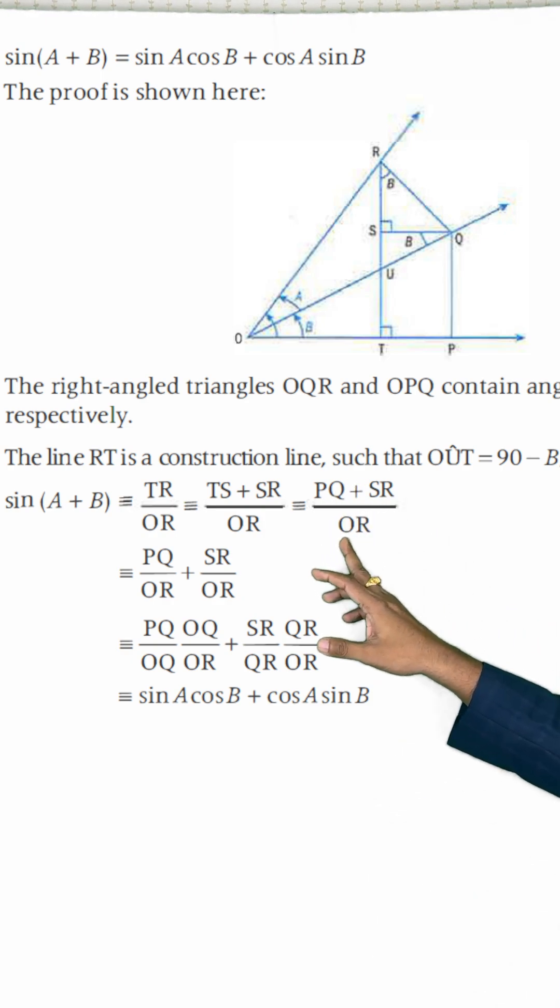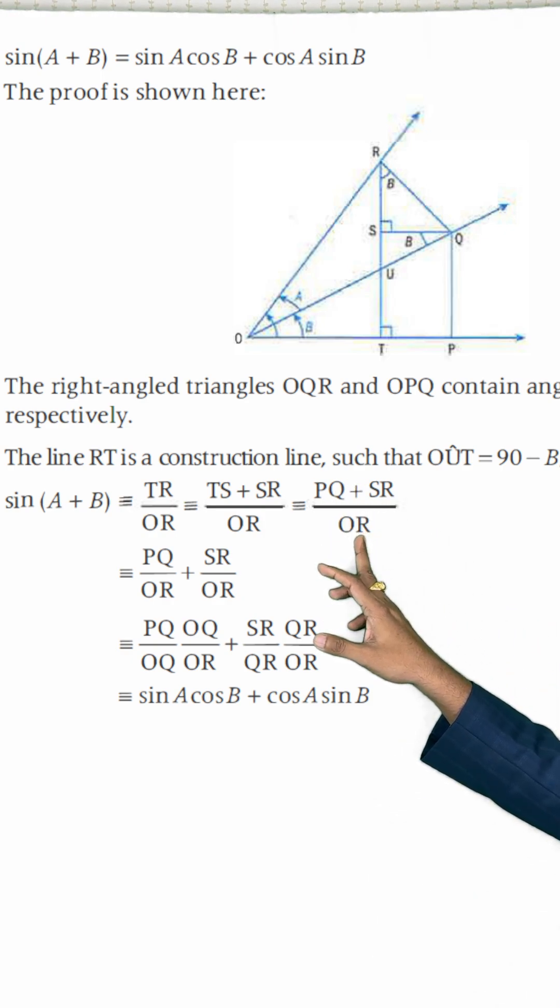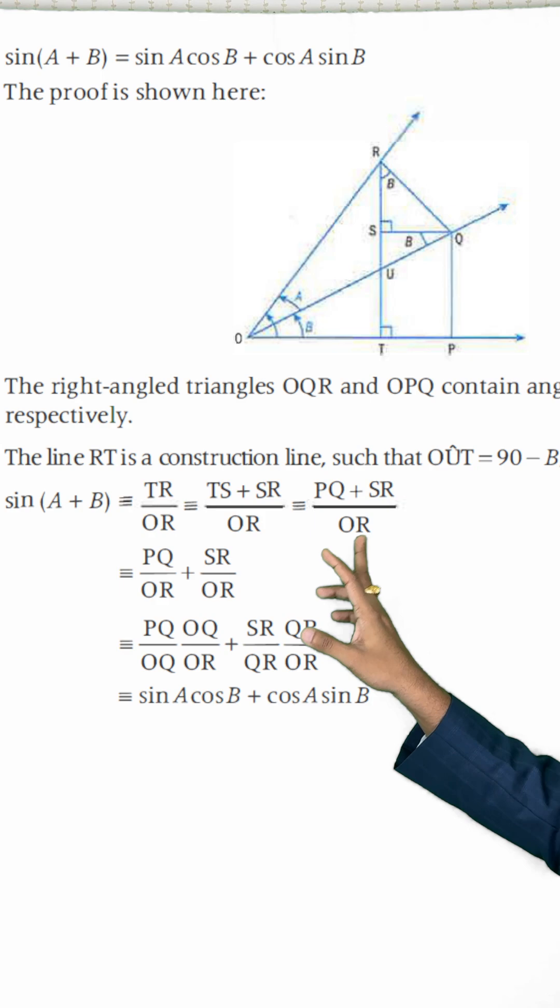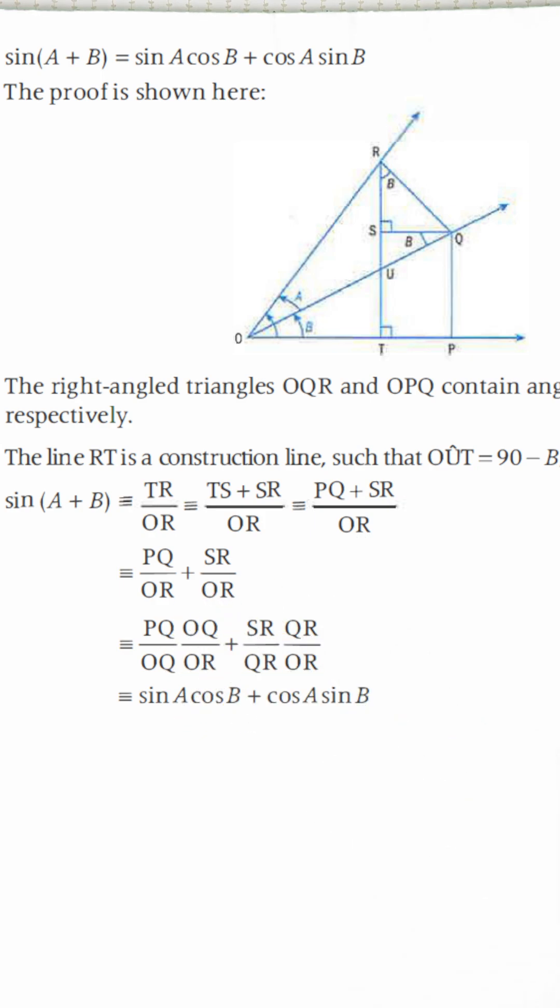Now, this OR is the denominator. This is the common denominator. So this will be the denominator for PQ and at the same time for SR. So this is what I have written here: PQ upon OR plus SR upon OR.